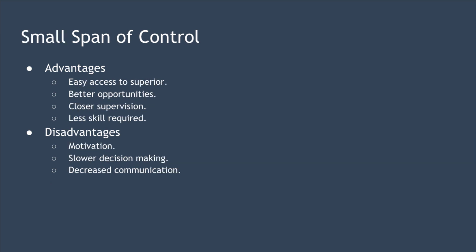Now let's take a look at the pros and cons of having a small span of control — essentially, the advantages and disadvantages of a tall organizational structure. In terms of advantages: easy access to a superior, so the subordinate can quickly and easily speak to their manager whenever they want, which can create the sense that communication is better. We have better opportunities for promotion, closer supervision and greater attention to the needs of the employee, and less skill required of the manager than when controlling a much larger group.